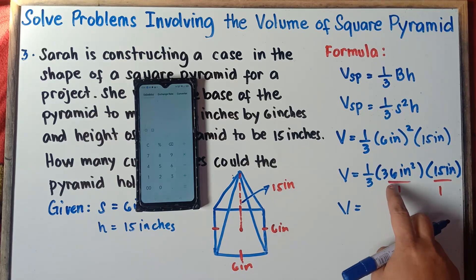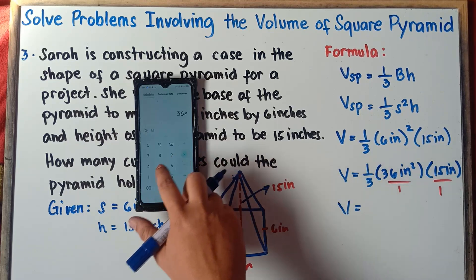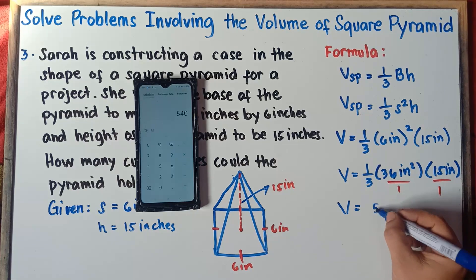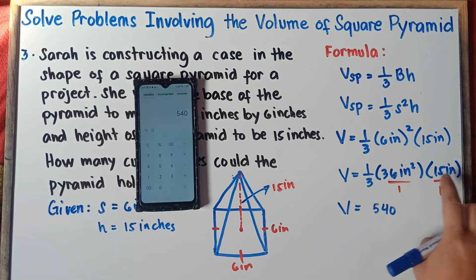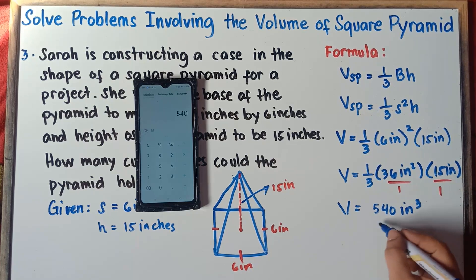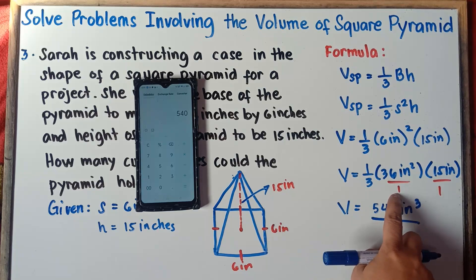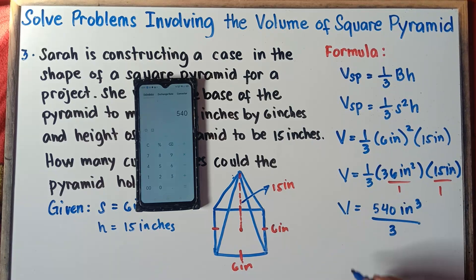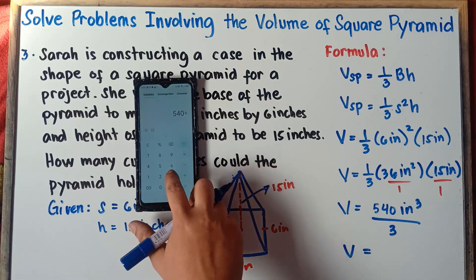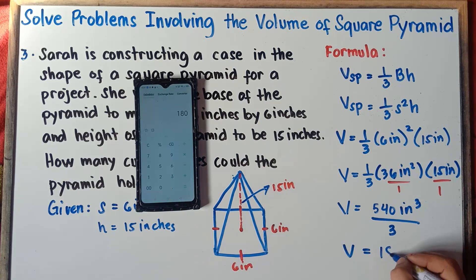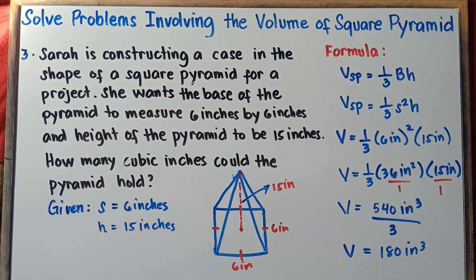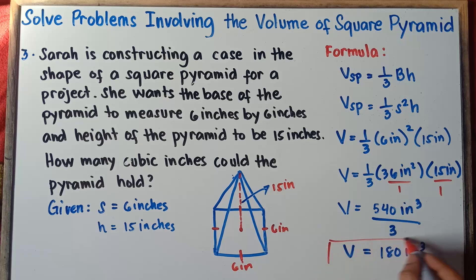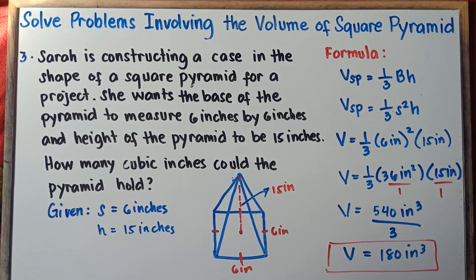Simply multiply 36 times 15, which equals 540. Square inches times inches gives cubic inches. Divide by 3: 540 divided by 3 equals 180. The volume is 180 cubic inches. So how many cubic inches could the pyramid hold? The answer is 180 cubic inches. That's the answer for example number 3.